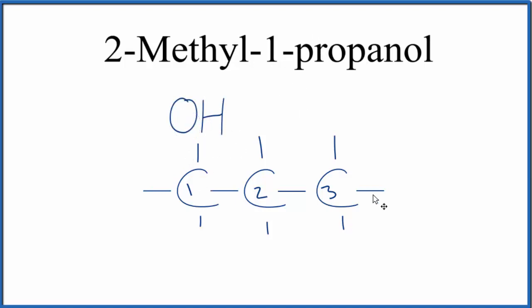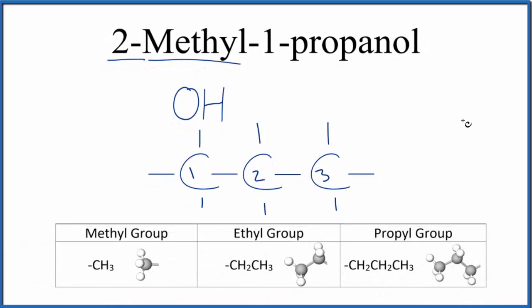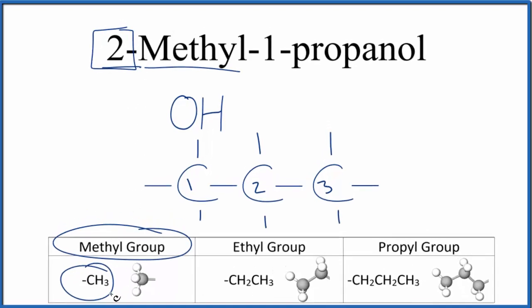So this is 1-propanol at this point. We also have this 2-methyl, a methyl group that looks like this. Methyl, that's just CH3. So on the second carbon, carbon number two, we're going to put CH3, the substituent group.